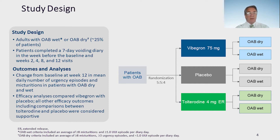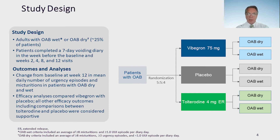Outcomes and analyses were based on change from baseline at week 12 in mean daily number of urgency episodes and micturitions in patients with OAB dry and wet, and the efficacy analyses compared Vibegron with placebo. All other efficacy outcomes, including comparisons between tolterodine and placebo, were considered supportive.